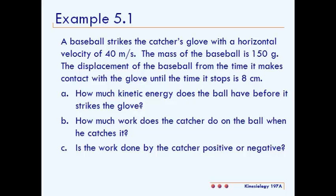In this video, we will be solving example 5.1. The problem reads: a baseball strikes the catcher's glove with a horizontal velocity of 40 meters per second. The mass of the baseball is 150 grams. The displacement of the baseball from the time it makes contact with the glove until the time it stops is 8 centimeters.